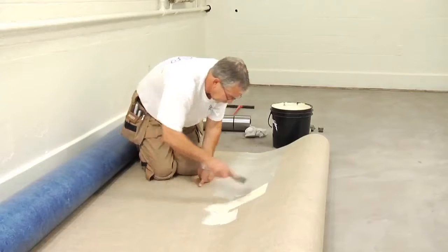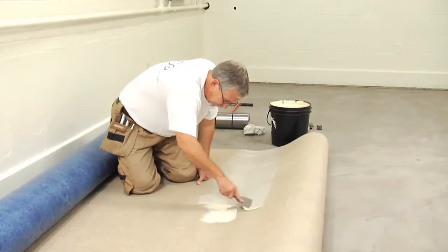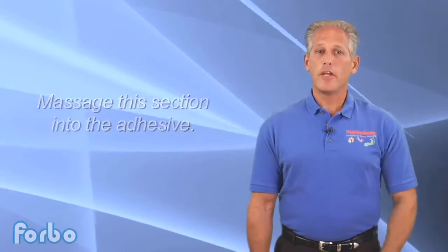During installation, apply adhesive with a flat side of a trowel to the back of the material under the stove bar. Then, massage this section of the material into the adhesive on the floor. If you don't, the result will be a speed bump type of bubble or irregularity showing across the full width of the sheet.